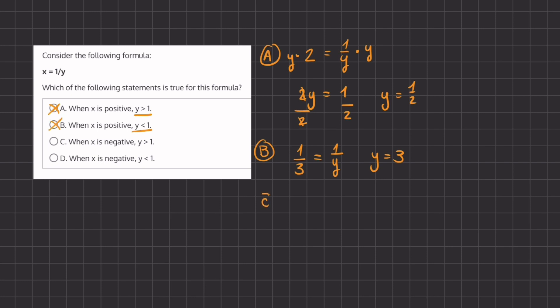Let's move on to option C. When x is negative, y is greater than 1. Now when x is negative, this is never true, because y will always have to be negative as well. It cannot be a positive number if x is negative. Let's show an example.